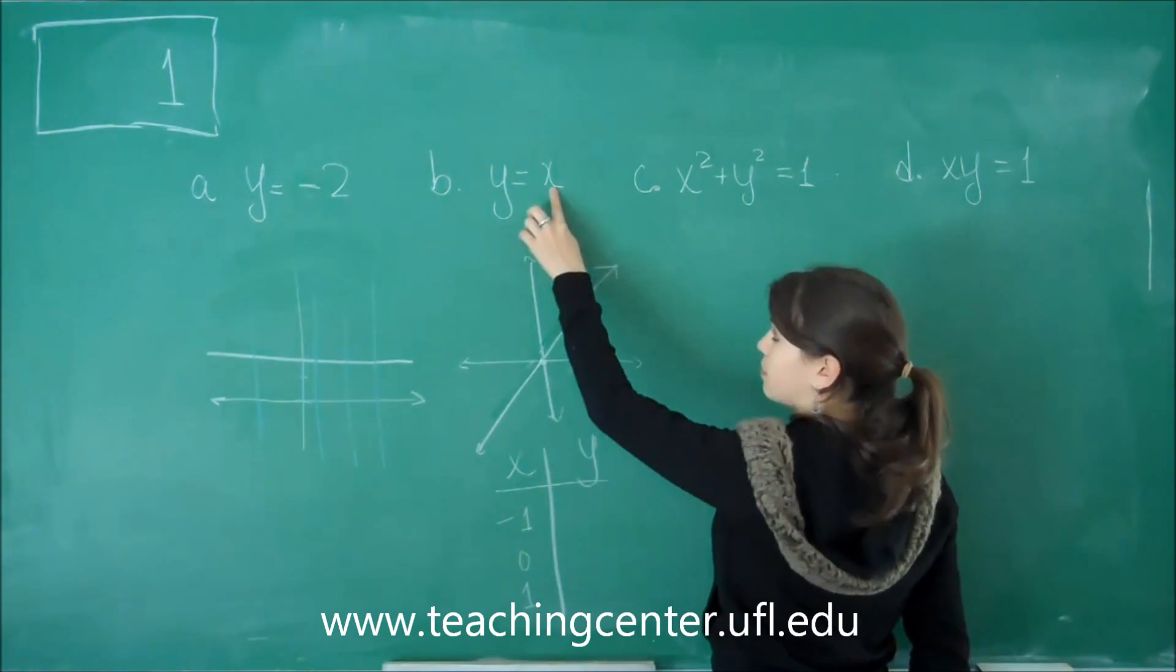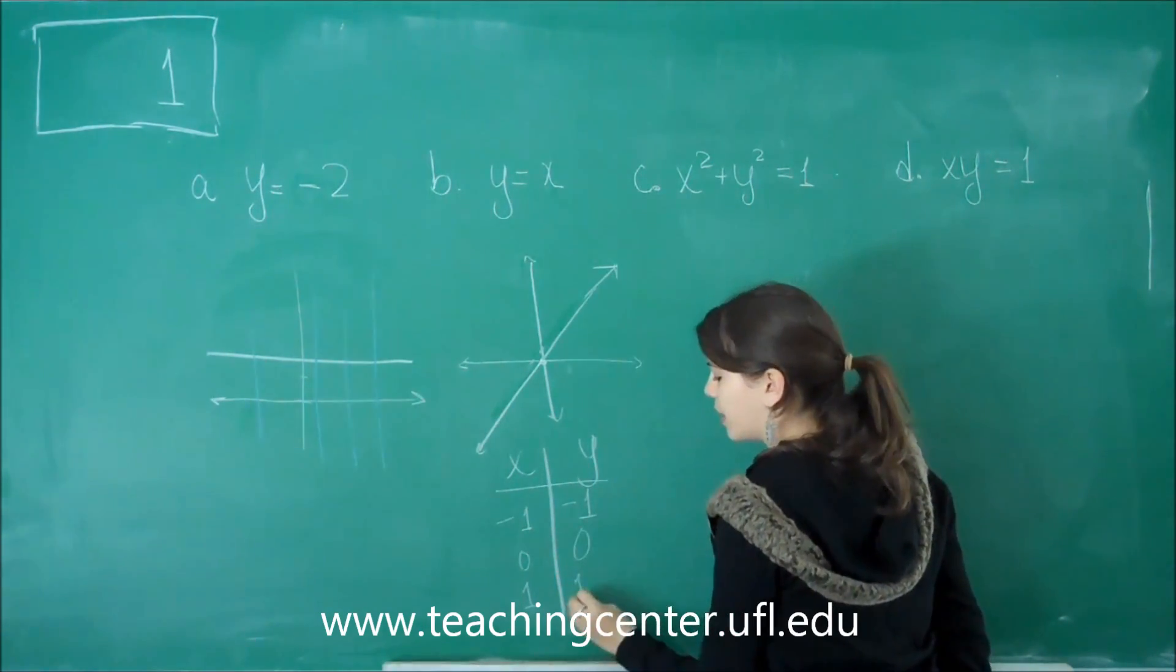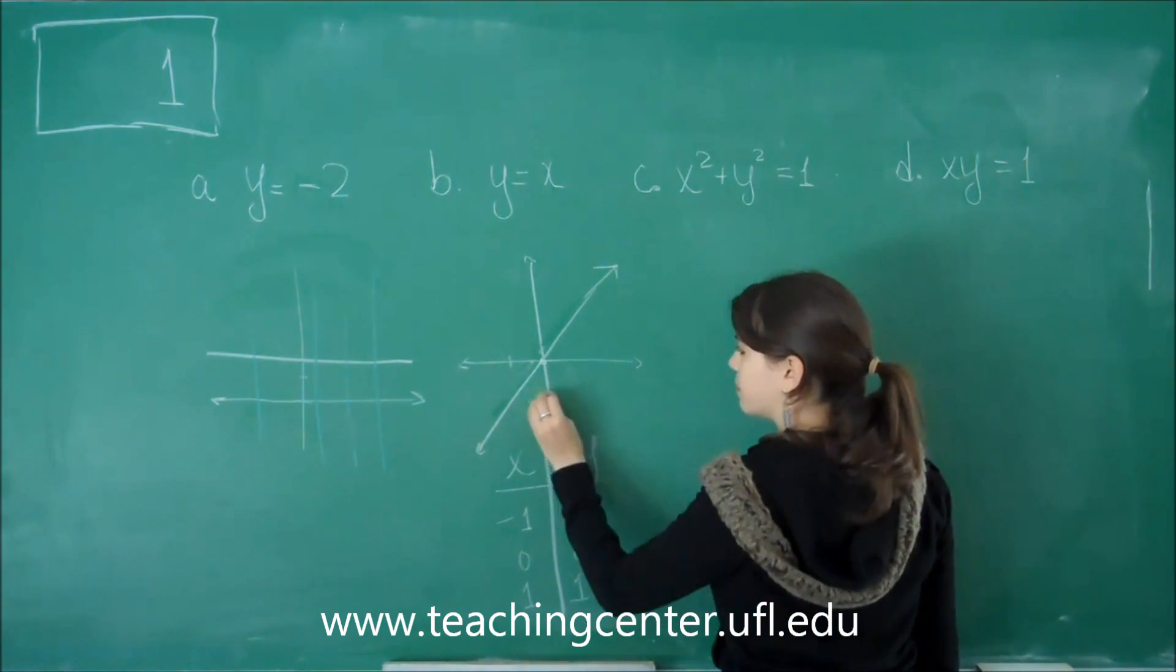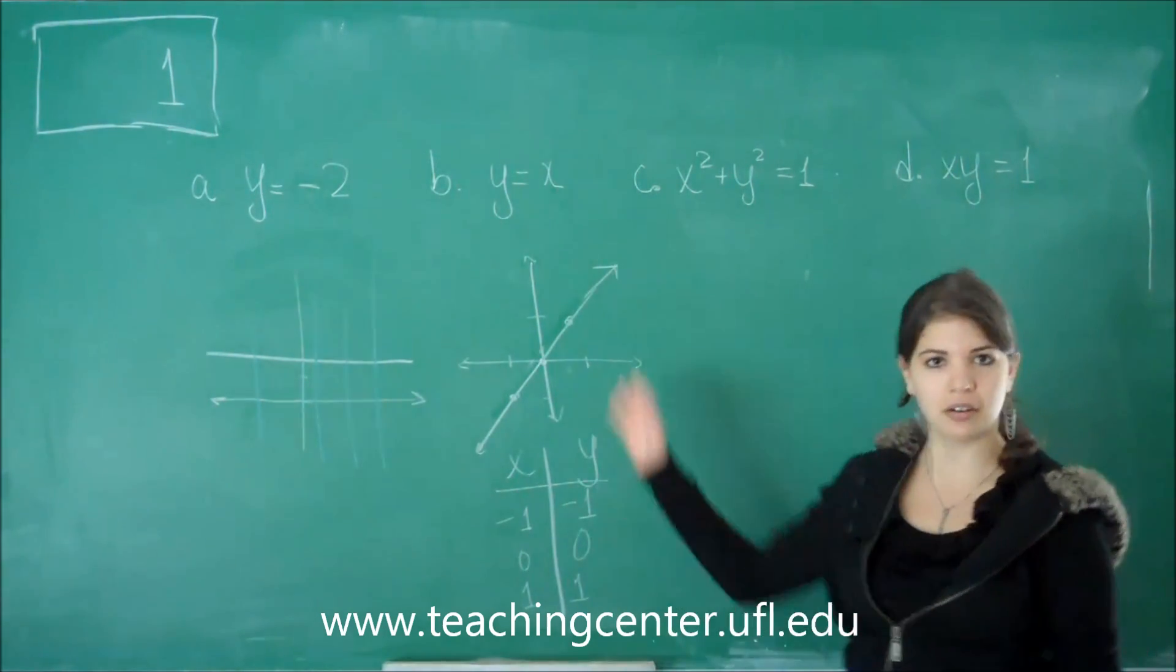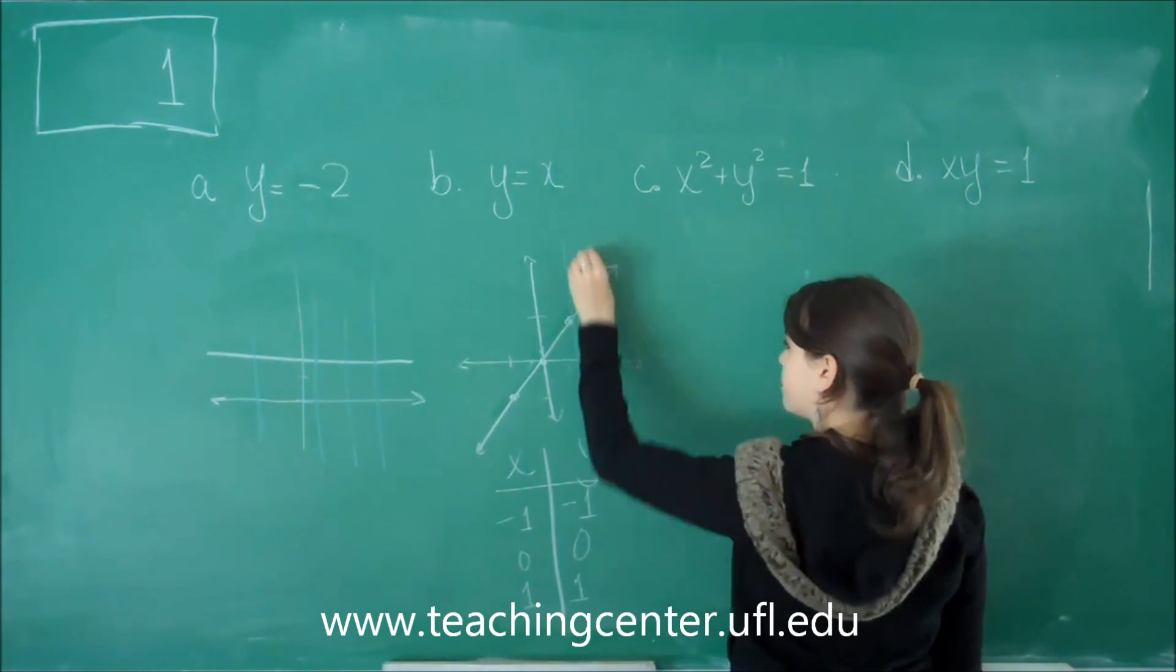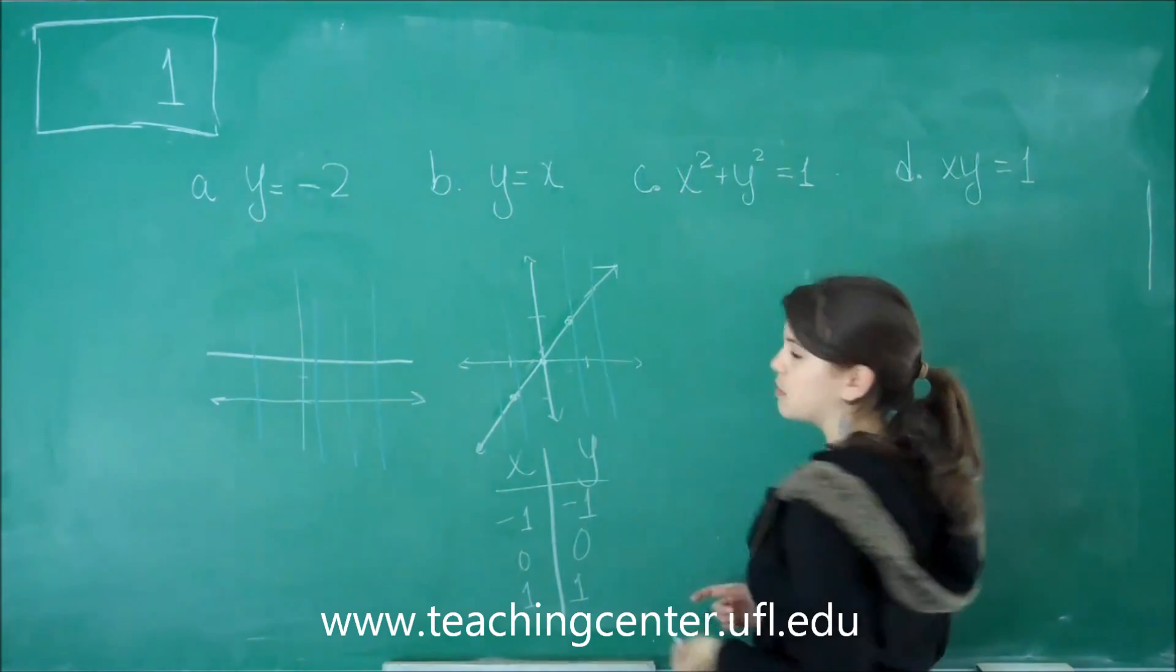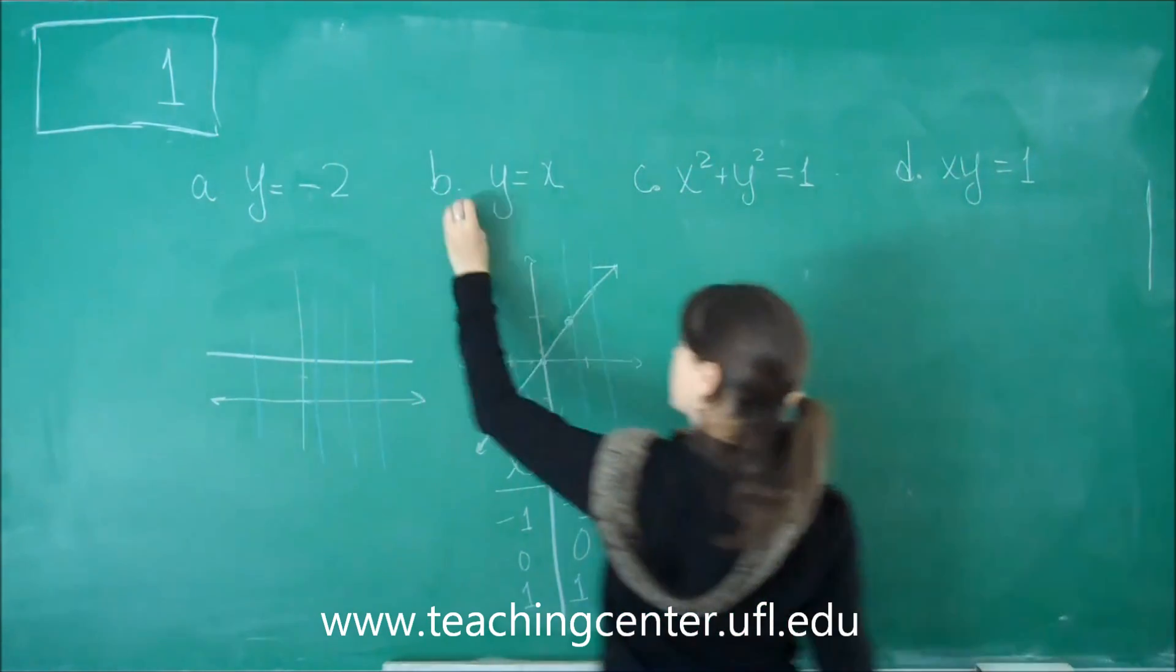So at negative 1, y is going to be negative 1. At 0, y is going to be 0. At 1, y is going to be 1. I'm just putting it back into here. So that means I have point negative 1, negative 1, which is going to be here, 0, 0, and then I have 1, 1. So you kind of notice the shape. And if I do the vertical line test, at every point that I cross this graph, I'm only going to hit one point. That means that it's passing the vertical line test, so this is also a function. So neither one of these is the answer.